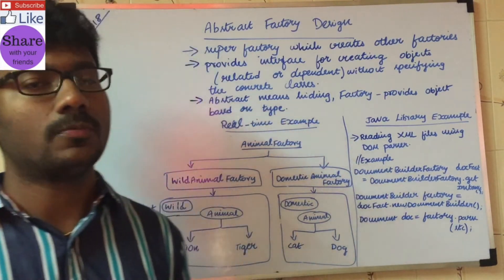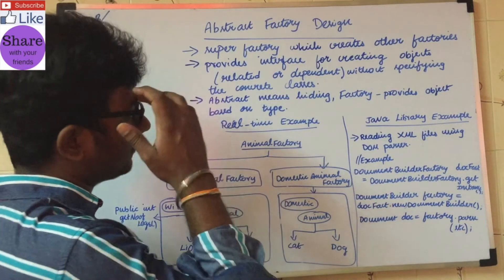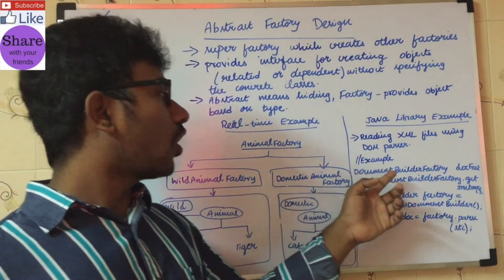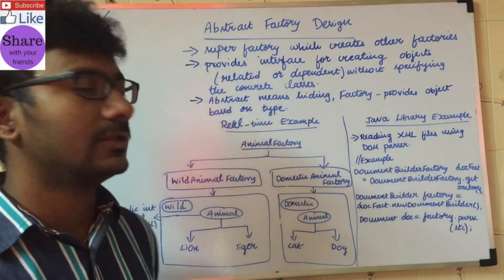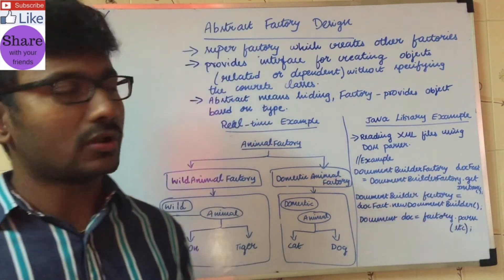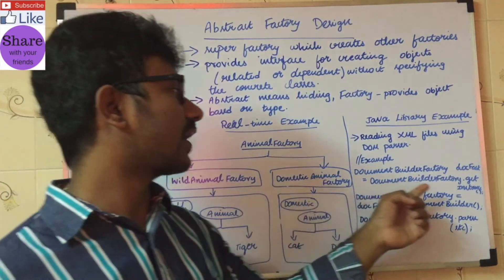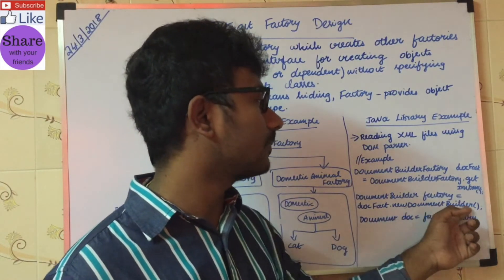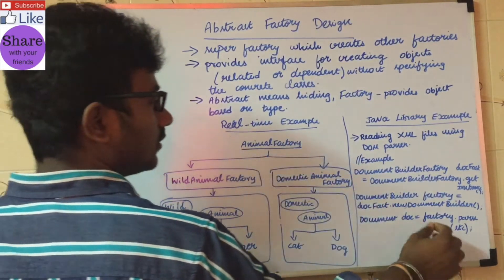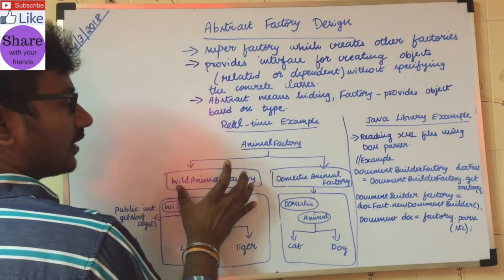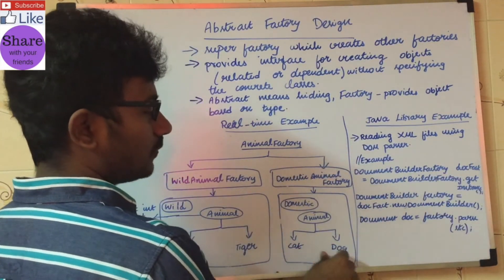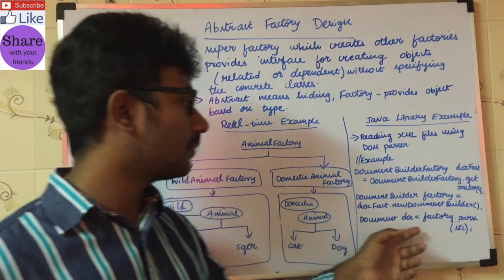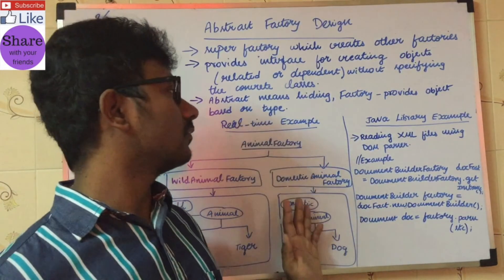This is an abstract factory for these two factories. This is real-time. In the next video, we will have a program. In Java libraries, there is an abstract factory example: DocumentBuilderFactory. DocumentBuilderFactory is like AnimalFactory — you get either a WildAnimalFactory object or a DomesticAnimalFactory object, and from that you can get cat or dog objects and call getNumberOfLegs(). factory.parse() is a real-time example of how to use the factory design pattern.